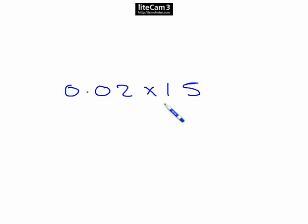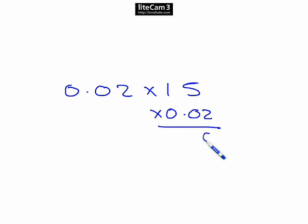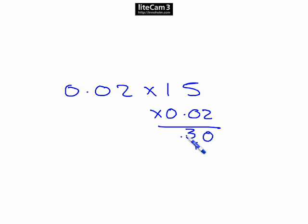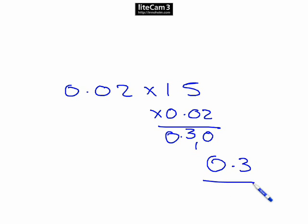Simple multiplication: 15 multiplied by 0.02. 5 times 2 is 10, 1 times 2 is 2, plus the carried 1 gives 3. We've got to put our decimal point back in — two decimal places — so our answer is 0.30.